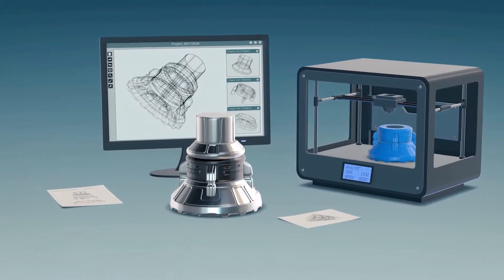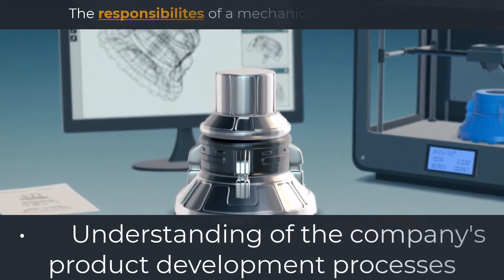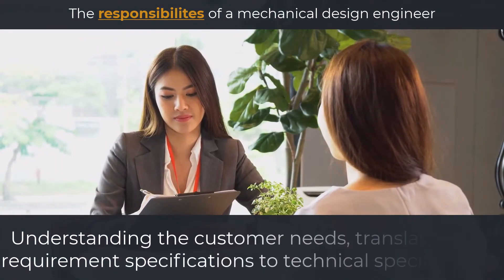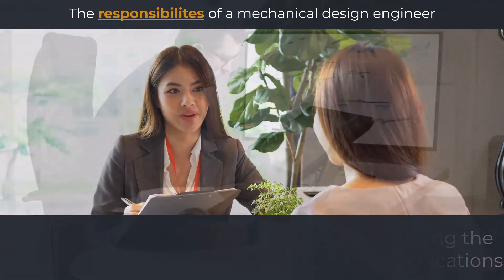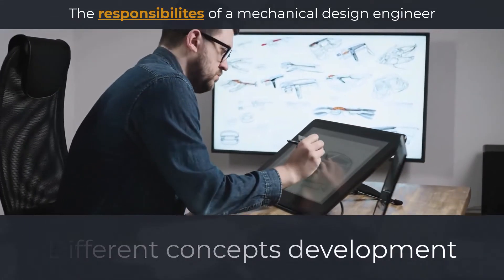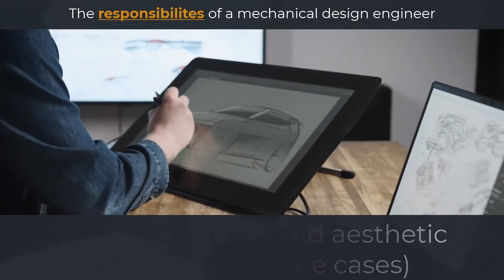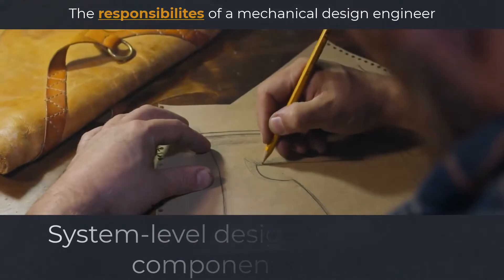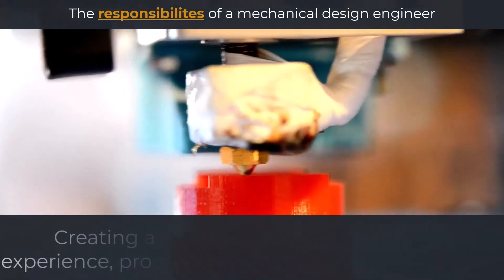The responsibilities of a mechanical design engineer may include understanding of the company's product development processes, understanding the customer needs, translating the requirement specifications to technical specifications, different concepts development, in some cases industrial design and aesthetic mock-ups.